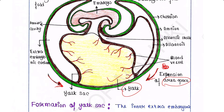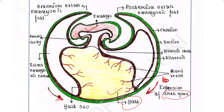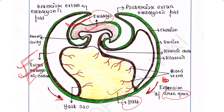The area opaca contains extra-embryonic ectoderm, mesoderm, and endoderm. It is the area around the developing embryo. The developing embryo is located at the central area of the blastodisc, which is the embryo-forming portion of an egg that appears as a small disc on the upper surface of the yolk mass. Initially, the coelom is continuous between the embryonic and extra-embryonic regions.